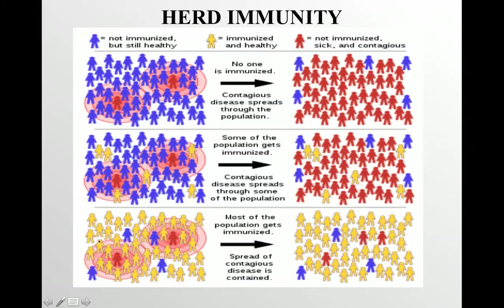In the third group, the majority of the population is immunized. The two sick contagious people are still there, but the spread of infection is now contained. The immunized people protect the remaining unimmunized individuals from getting the infection — this is herd immunity. When the majority of the population is immunized and the disease is contained, the remaining unimmunized people will not catch the disease; they are protected by the herd.